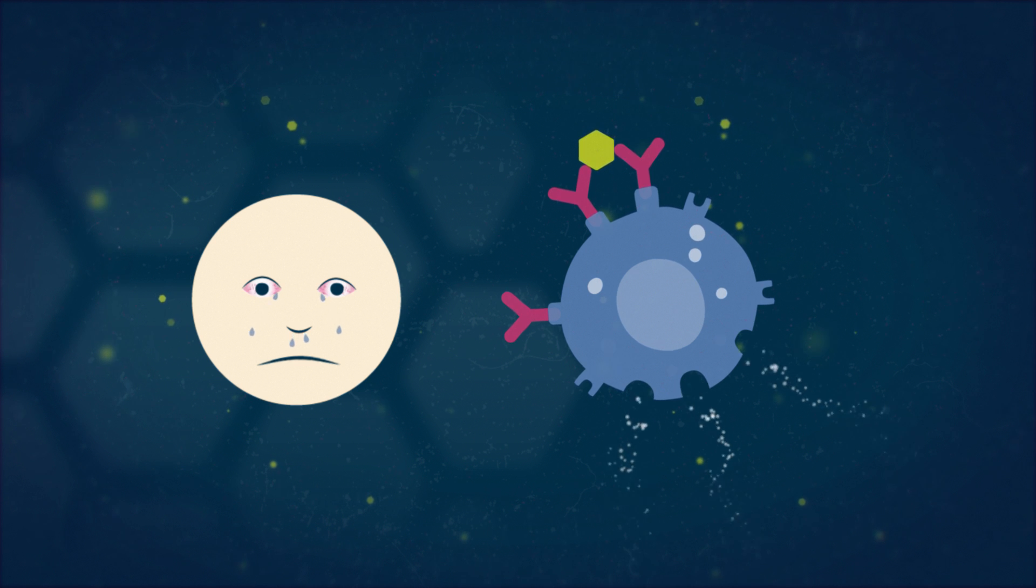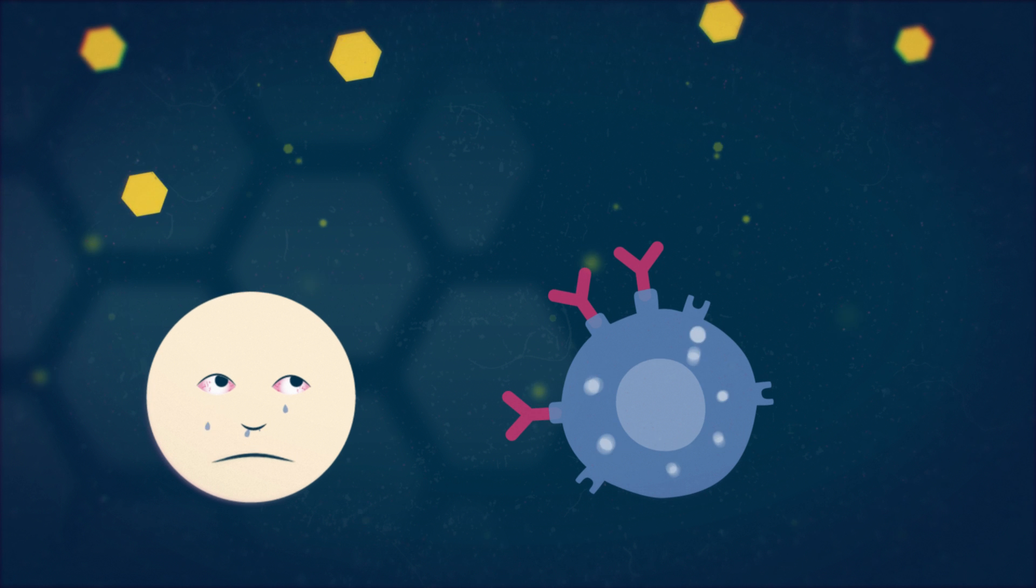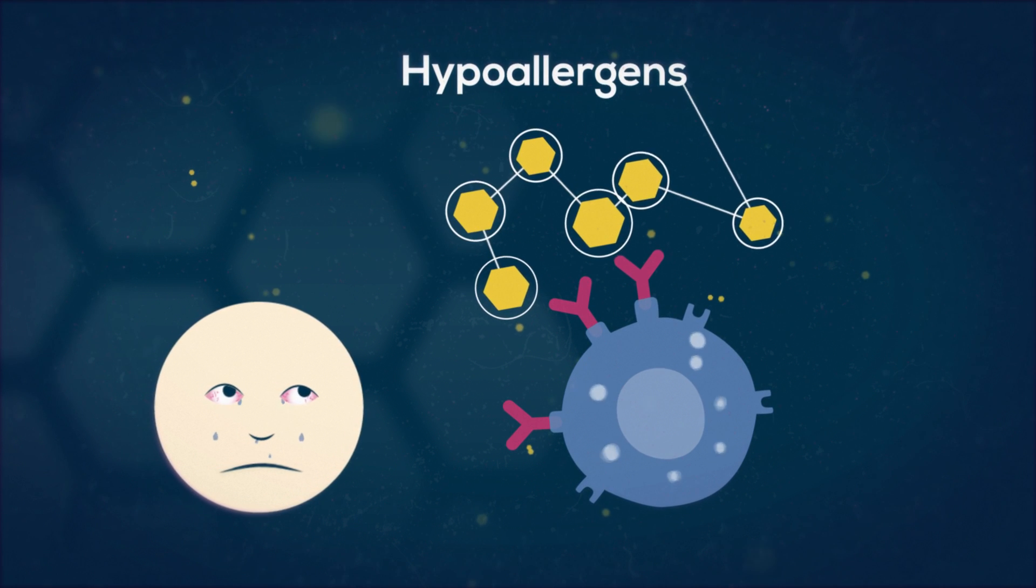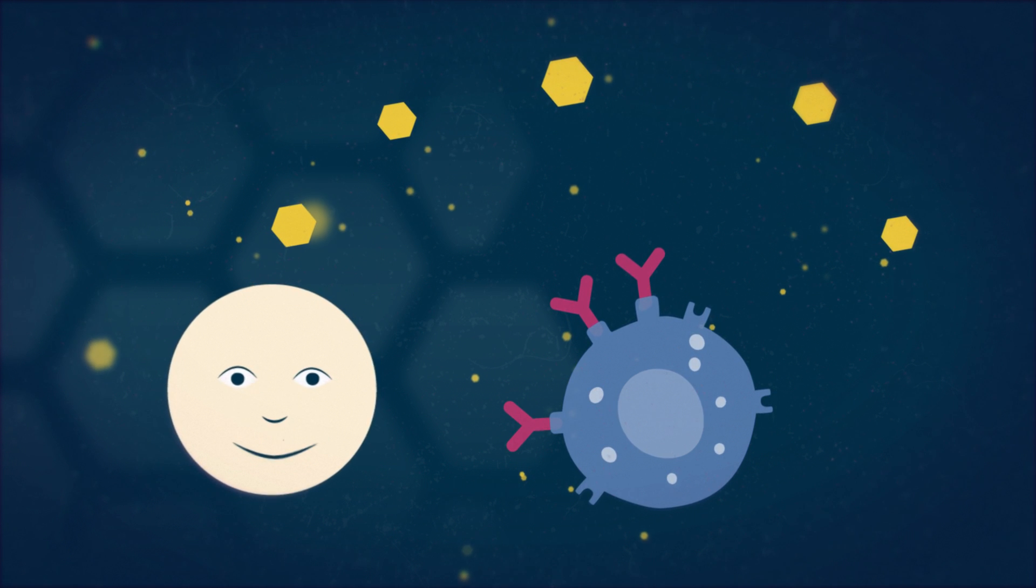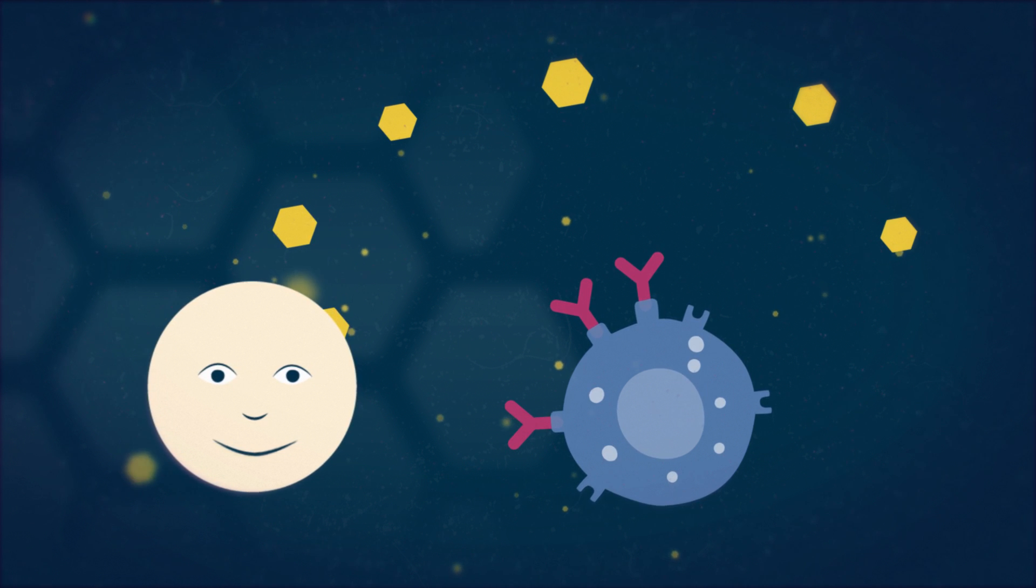Histamine causes the allergic symptoms. Our vaccines consist of specifically modified recombinant allergens, called hypoallergens, that cannot cross-link IgE. That suppresses the allergic symptoms during desensitisation, allowing for a faster and safer vaccination.